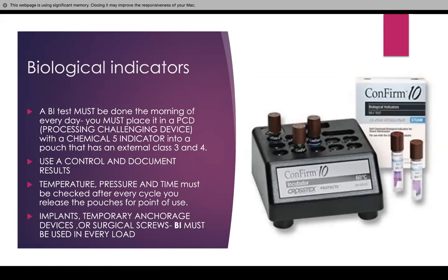Then we are going to pouch it. We are going to label it with the date, time, cycle load, sterilizer used, and the initials — just like any other instrument. Then we are going to place a class 5 indicator. The class 3 and 4 are already on the pouches. We have to use a control and document the results.